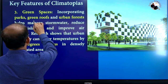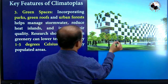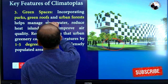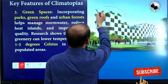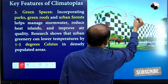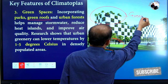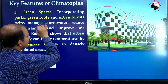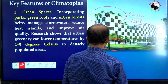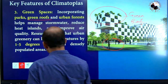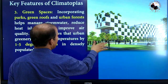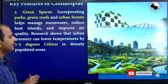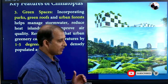Green air space means such things as green parks, green roofs, and urban forests. Green roofs and green parks are very significant, and urban forests like this are also important. Climatopia is very significant to fight climate change and global warming.